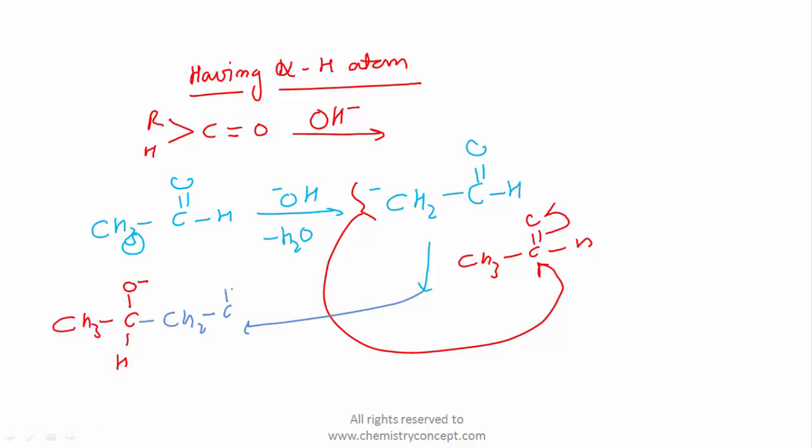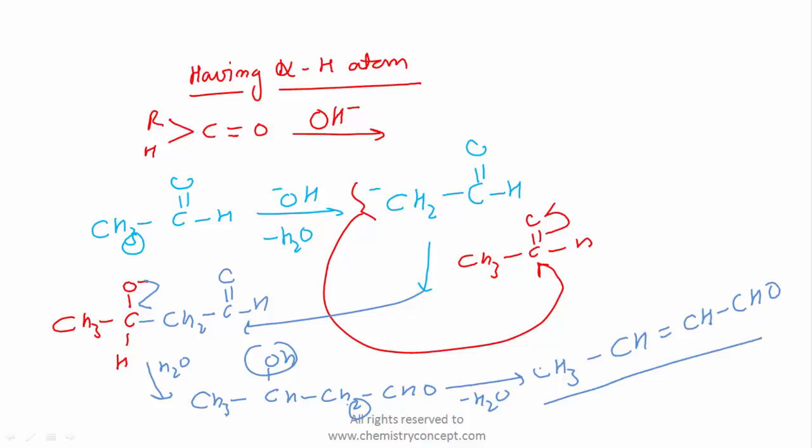When we add water molecule into this, we get CH3 C OH CH2 CHO. With removal of water molecule, we'll get CH3, and this OH and H will come out, giving us CH double bond CH CHO. So we are getting an alpha unsaturated aldehyde. This is how aldol condensation takes place.